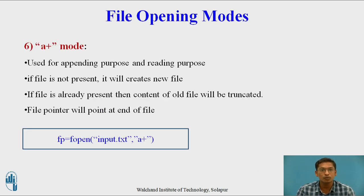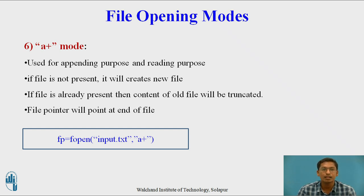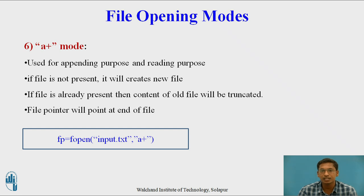The last file opening mode is a+ mode. It is the advanced version of a (append) mode. a+ mode is used for appending new content at the end of the file, and it can also be used for reading purpose. If the file is not present, it will create a new file. If the file is already present, the file pointer will point at the end of the file, because new content will be added at the end. Example: fp = fopen("input.txt", "a+").